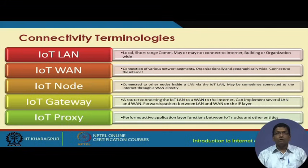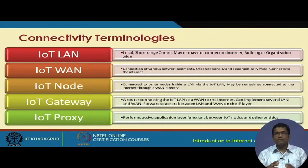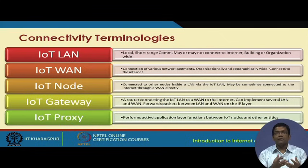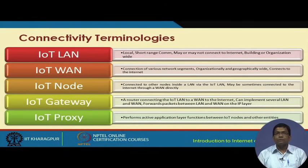The IoT VAN can connect to the internet. The IoT node is the connectivity of different nodes inside a LAN or VAN. The IoT gateway is basically like a router that connects to the IoT LAN — it is the outside world beyond a LAN, typically connecting to the VAN. In a VAN, several LANs can be connected through individual gateways. The proxy is similar to what we use proxies for — security, sub-networking, and so on.